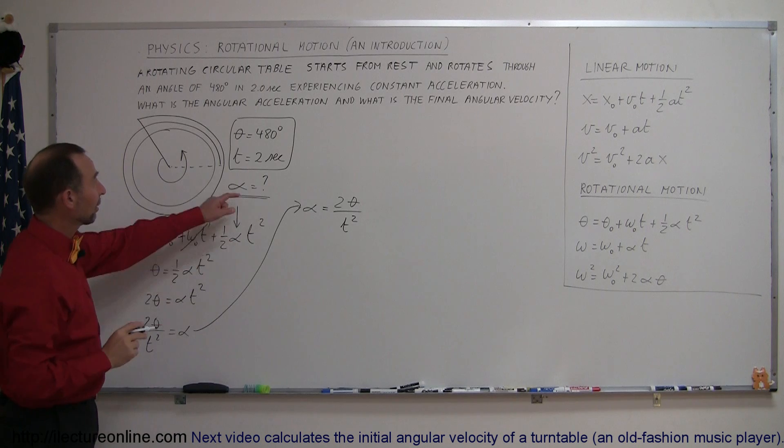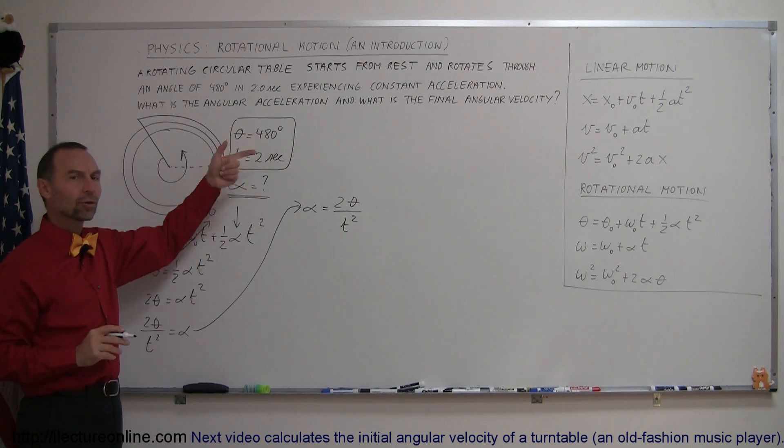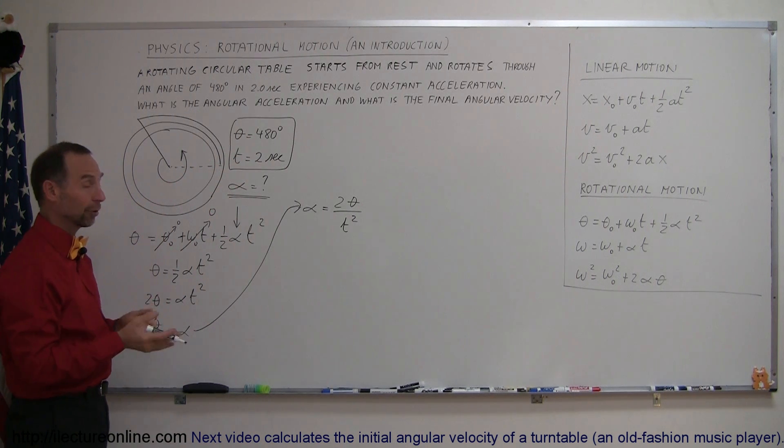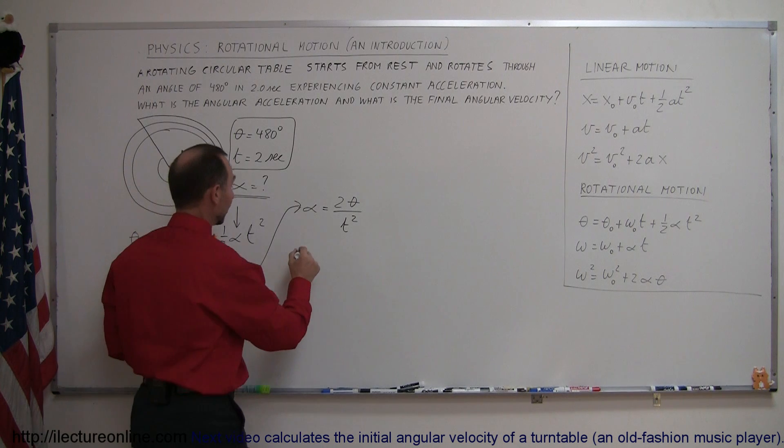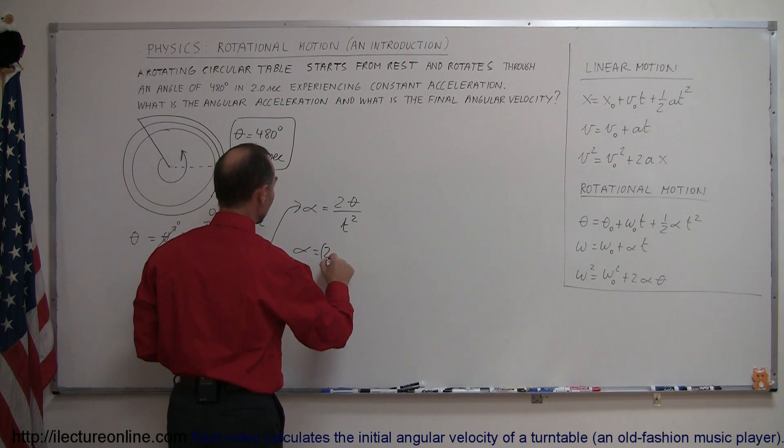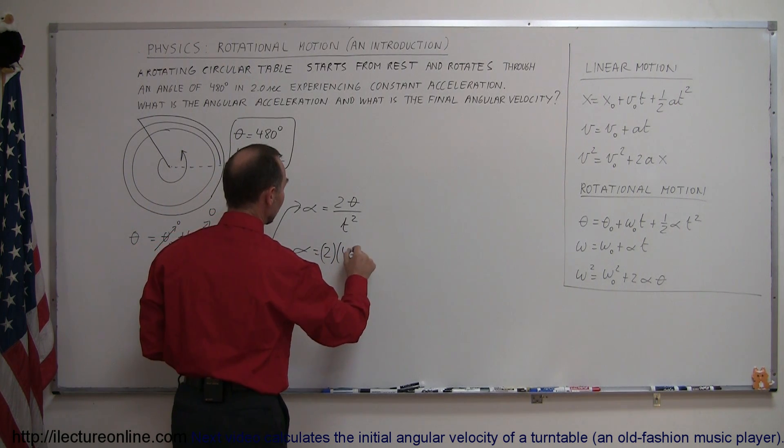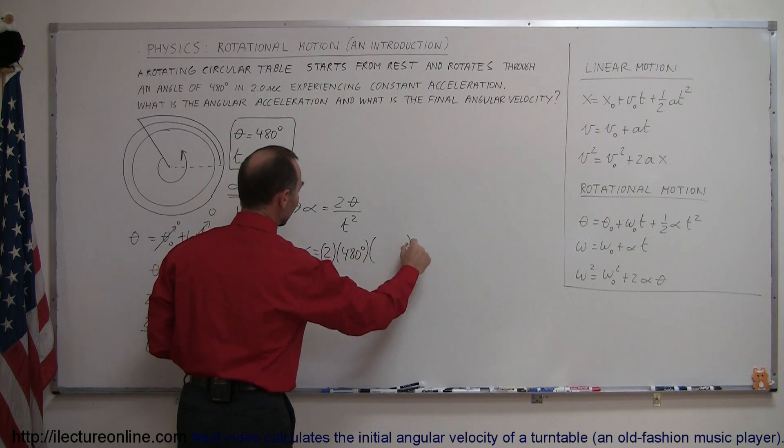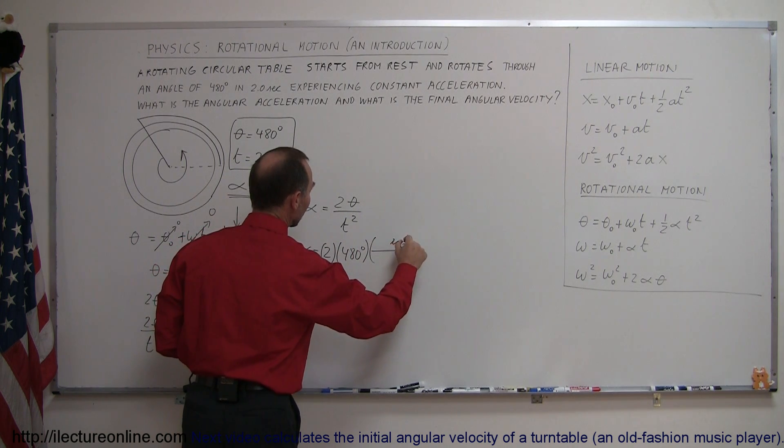Now, the angular distance is given to us in degrees. Degrees is not standard units, we have to convert from degrees to radians. So alpha equals 2 times 480 degrees, but we have to convert from degrees to radians.